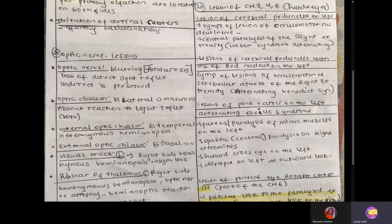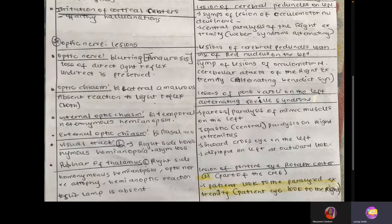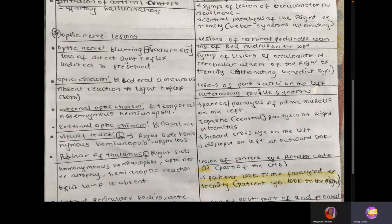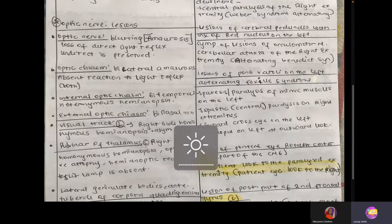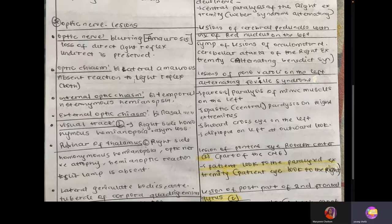Question 24 talks about signs and symptoms of optic nerve lesion. Depending on which part of the optic nerve pathway is damaged, we're going to have different presentations. If there's lesion of the optic nerve, there will be blurring, also known as amaurosis — A-M-A-U-R-O-S-I-S. Then if there's lesion in the optic chiasm, the blindness will be bilateral with absent reaction to light reflex.